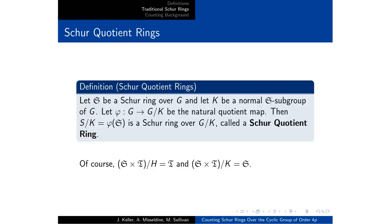We also have Schur quotient rings. So given a normal S-subgroup, since we're working with cyclic groups any subgroup is a normal subgroup. And this natural quotient map from G to G mod K, if we take classes of the Schur ring S and map them according to phi, this will produce for us our Schur quotient ring.